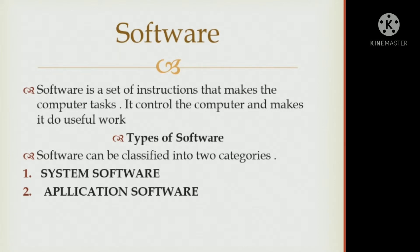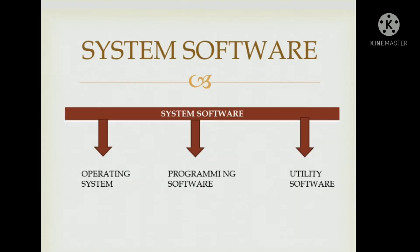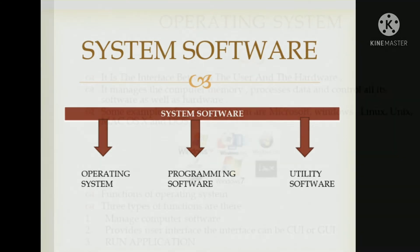Types of software: software can be classified into two categories — system software and application software. System software is an important component to operate a computer. It can be classified into three categories: operating system, programming software, and utility software.